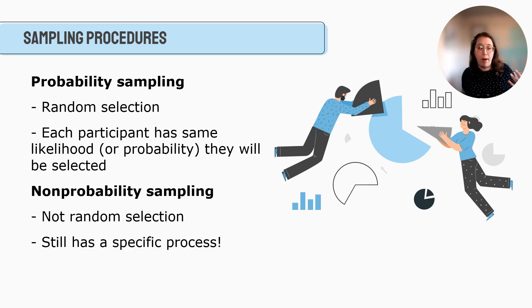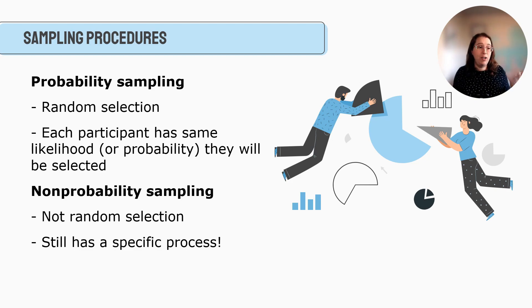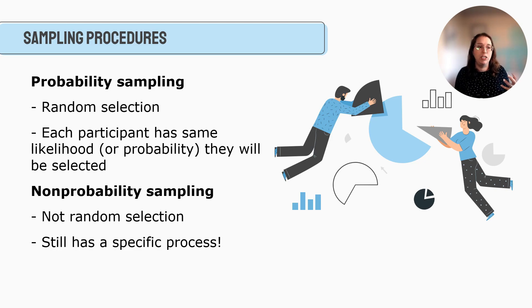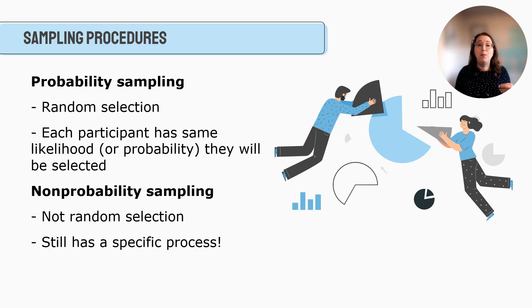Non-probability sampling is more common in social work research and is not dependent on random selection. We'll talk about the different ways we can select people in a non-probability sampling procedure. Even though it may not have random selection or follow probability sampling criteria, it still has a specific process.